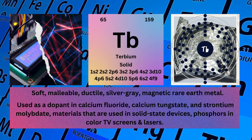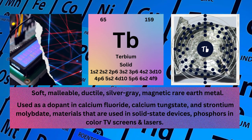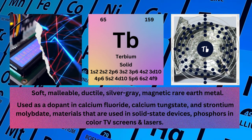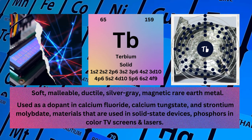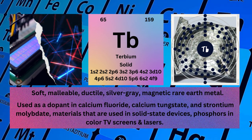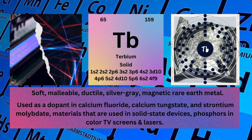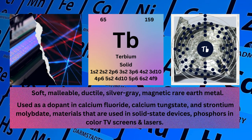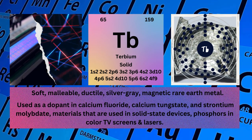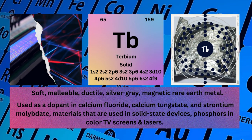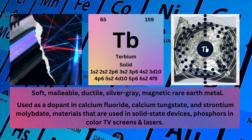Terbium is used as a dopant in calcium fluoride, calcium tungstate, and strontium molybdate — materials used in solid-state devices, phosphors in color TV screens and lasers.